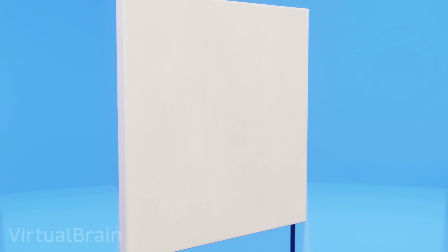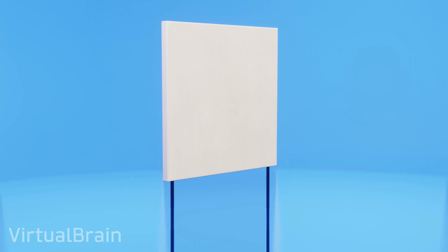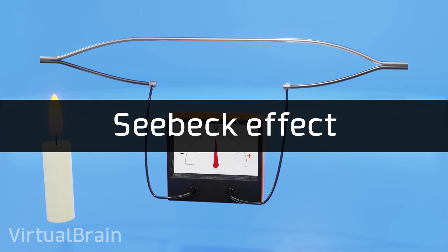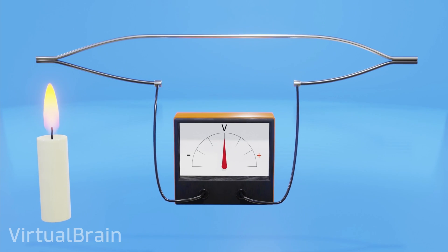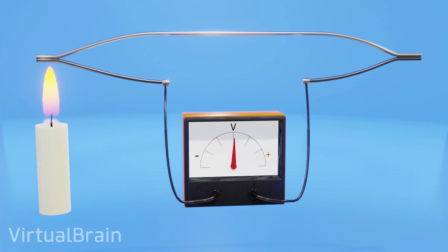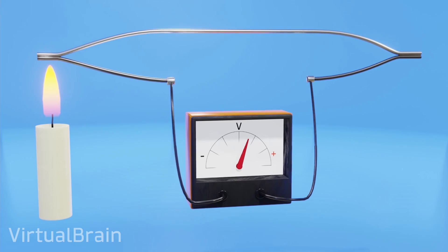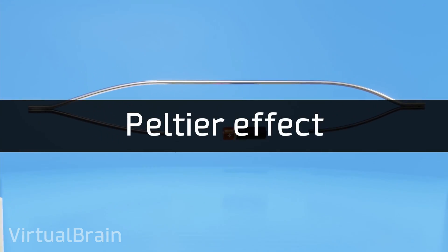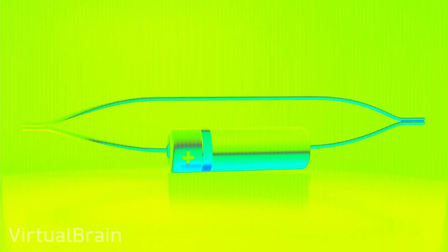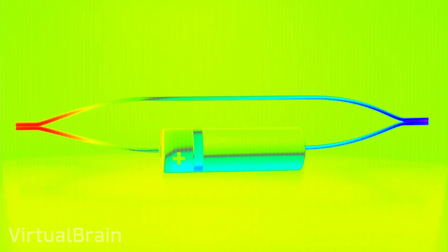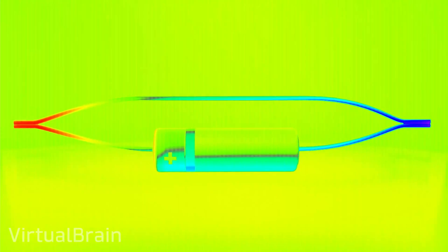So that you don't get confused, first I want to clarify several terms. First, the Seebeck effect refers to the phenomenon that occurs when a temperature gradient between the junctions of two different materials generates a voltage. Secondly, the Peltier effect refers to the generation of a temperature gradient when a voltage is applied between two different materials that are in contact.